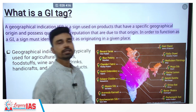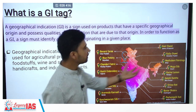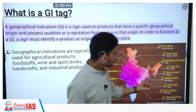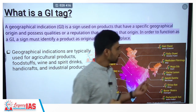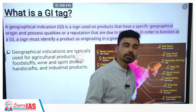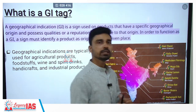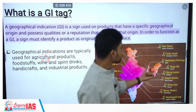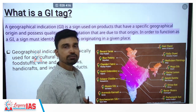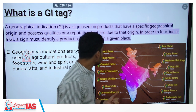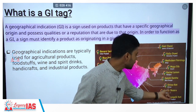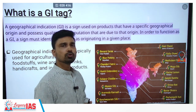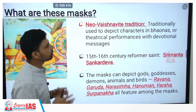This is not the first time a GI tag has been given to a product from India. For example, within Assam, Muga silk has also received the GI tag. At the all-India level, Darjeeling tea from West Bengal was the first product to receive a GI tag in India. Similarly, Banarasi saree from Uttar Pradesh, blue pottery from Rajasthan, Odisha ikat, and Bastar dhokra are among the many products from different parts of India that have received GI tags.